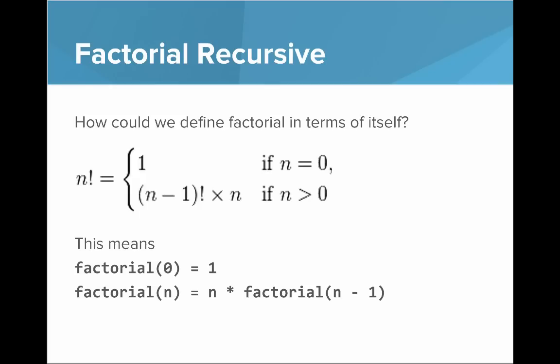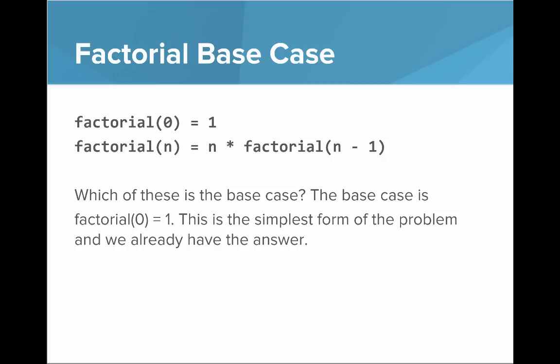So writing that in another way, that means factorial of zero is equal to one, and factorial of n equals n times factorial of n minus one. You can already see the recursion there because a method is including a call to itself. So let's dive into the parts. First, the base case. Which of these is the base case? Well, the base case is factorial of zero equals one. This is the simplest form of the problem and we already have the answer, so other things can build on top of this.